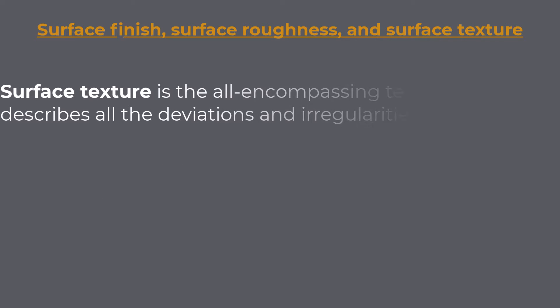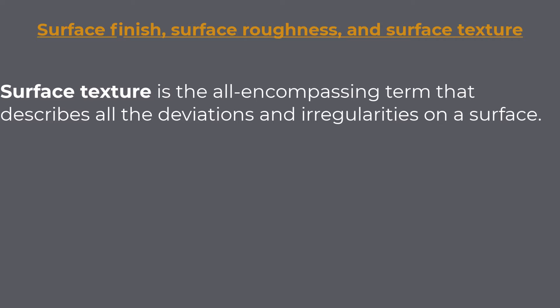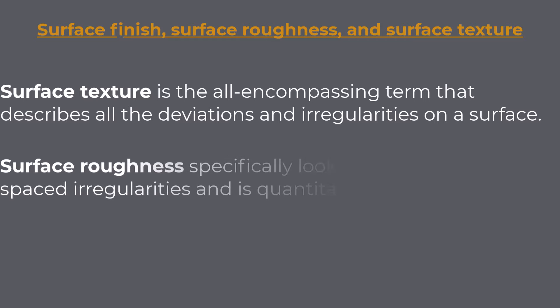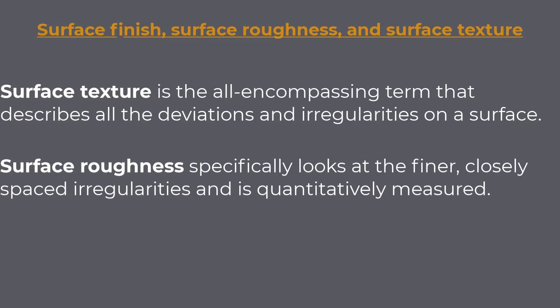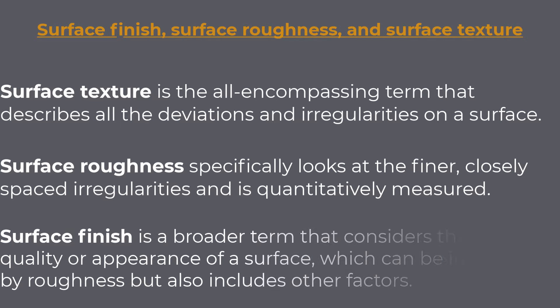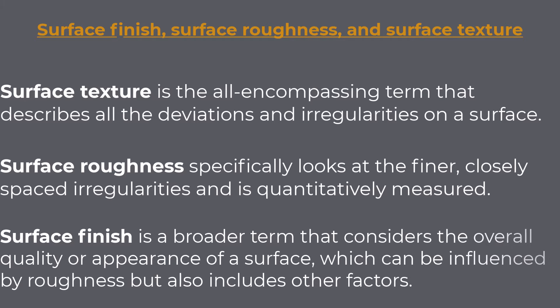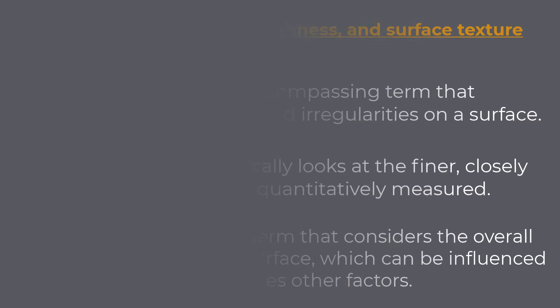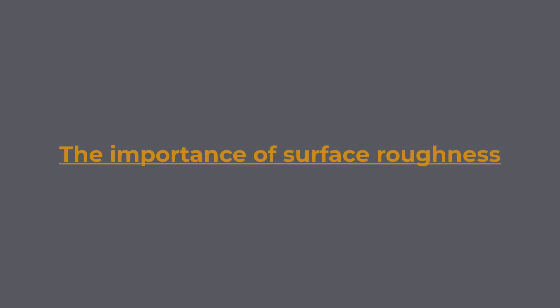In summary: surface texture is the all-encompassing term that describes all the deviations and irregularities on a surface. Surface roughness specifically looks at the finer, closely spaced irregularities and is quantitatively measured. Surface finish is a broader term that considers the overall quality or appearance of a surface, which can be influenced by roughness but also includes other factors.